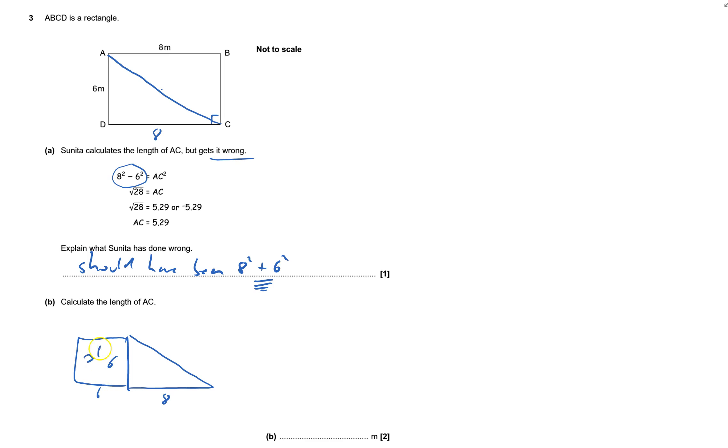6 × 6 = 36, 8 × 8 = 64. The whole thing here would be 64 + 36 = 100. So this side will be √100, which is 10.